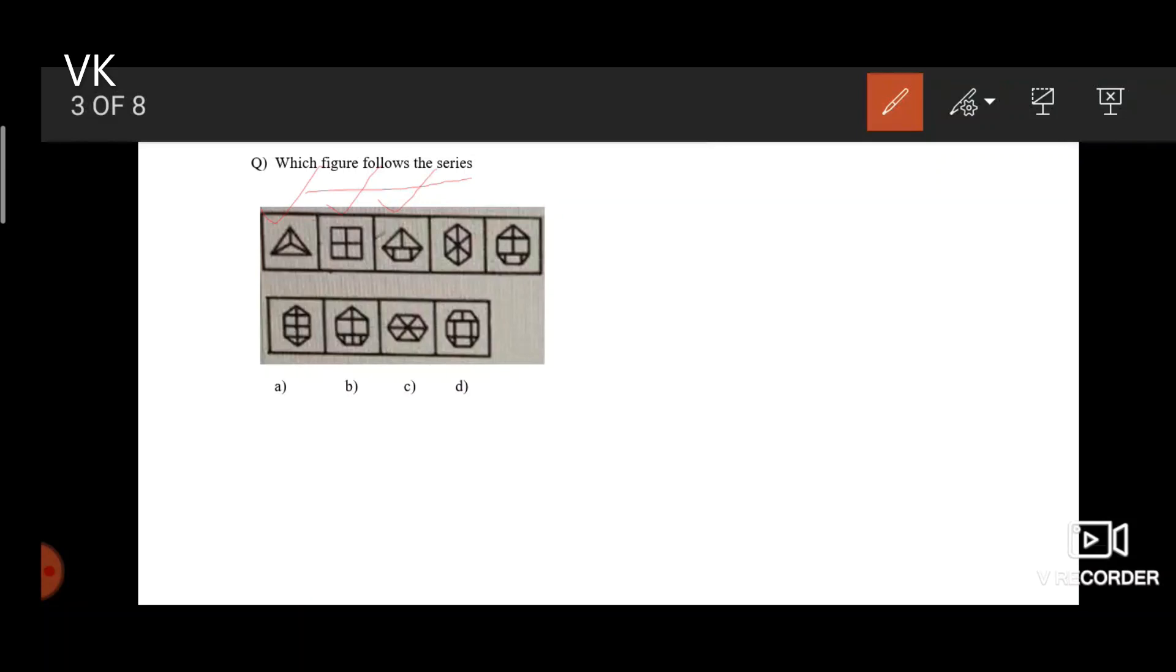So triangle, square, pentagon, hexagon, heptagon and what comes after heptagon? It is octagon, the one which has 8 sides. Hence option D is our final answer.